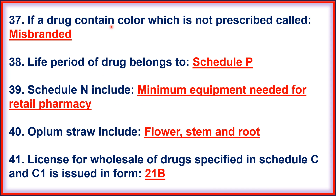37. If a drug contains color which is not prescribed, it is called misbranded. 38. Life period of drugs belongs to Schedule B. 39. Schedule N includes minimum equipment needed for retail pharmacy. 40. Opium straw includes flower, stem, and root. 41. License for wholesale of drugs specified in Schedule C and C1 is issued in Form 21D.